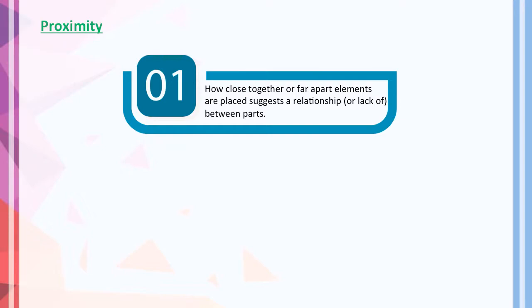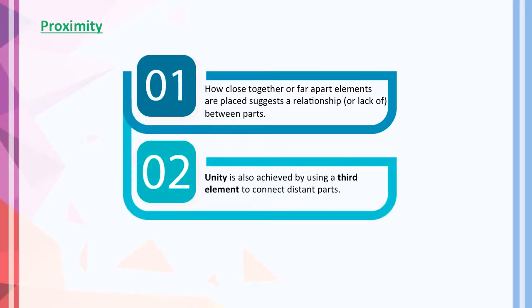In terms of proximity, it refers to how close together or far apart elements are placed, indicating a relationship or lack of relationship between the parts. Unity is also achieved by using a third element to connect distant parts together.